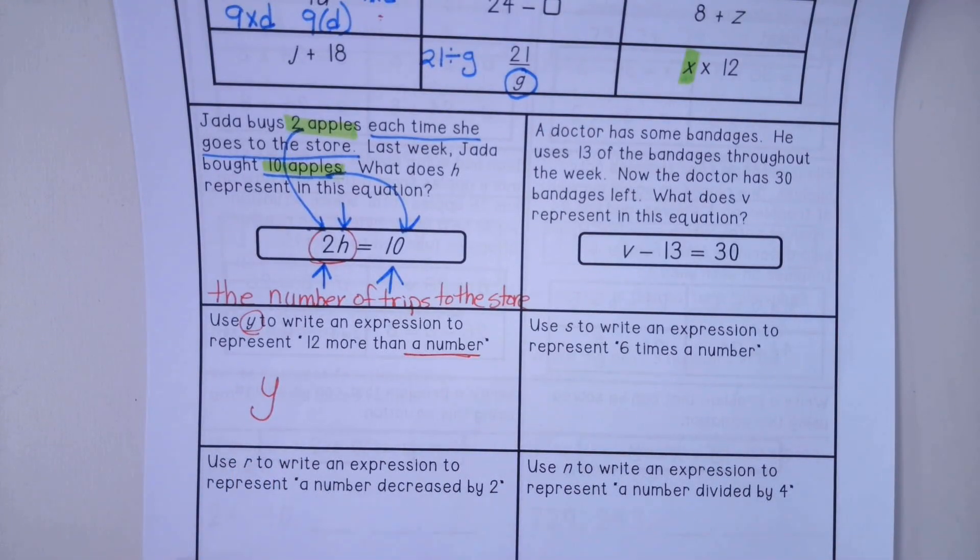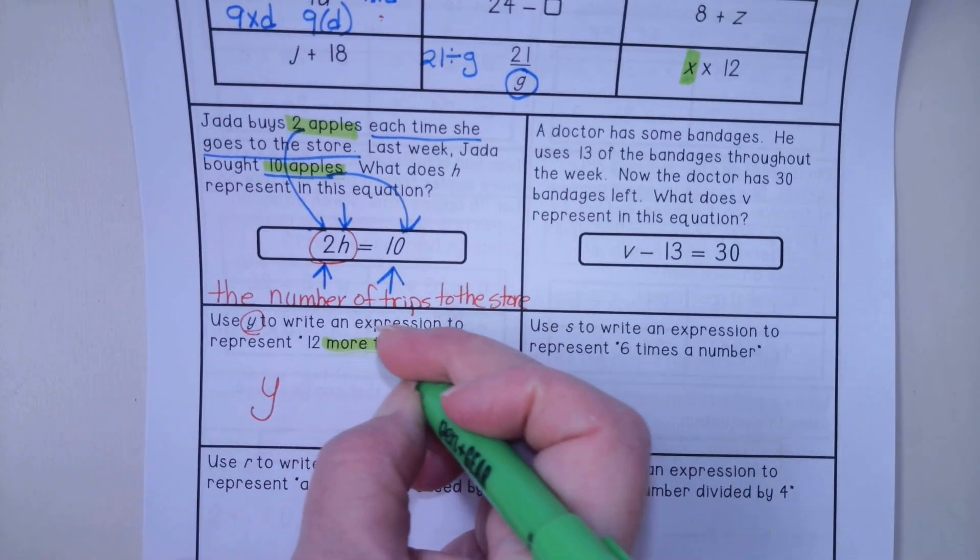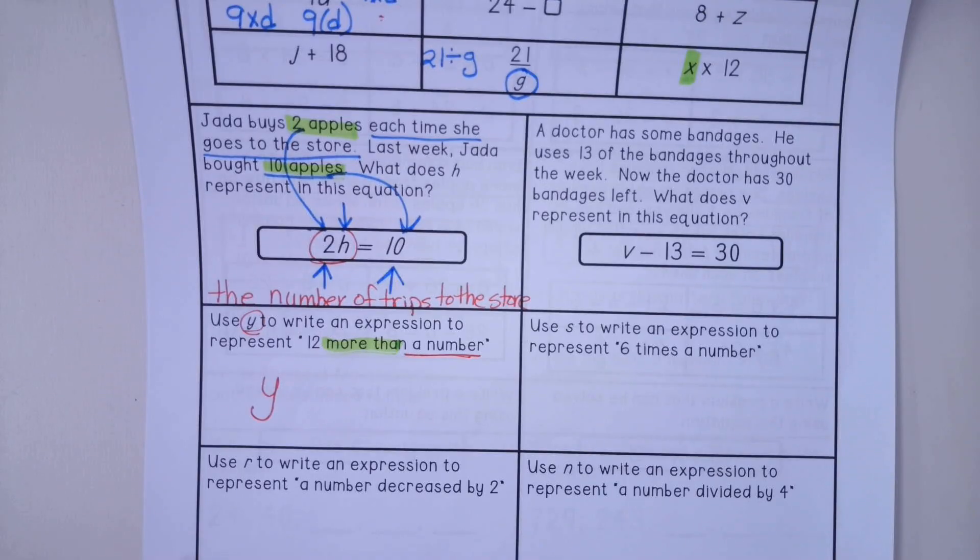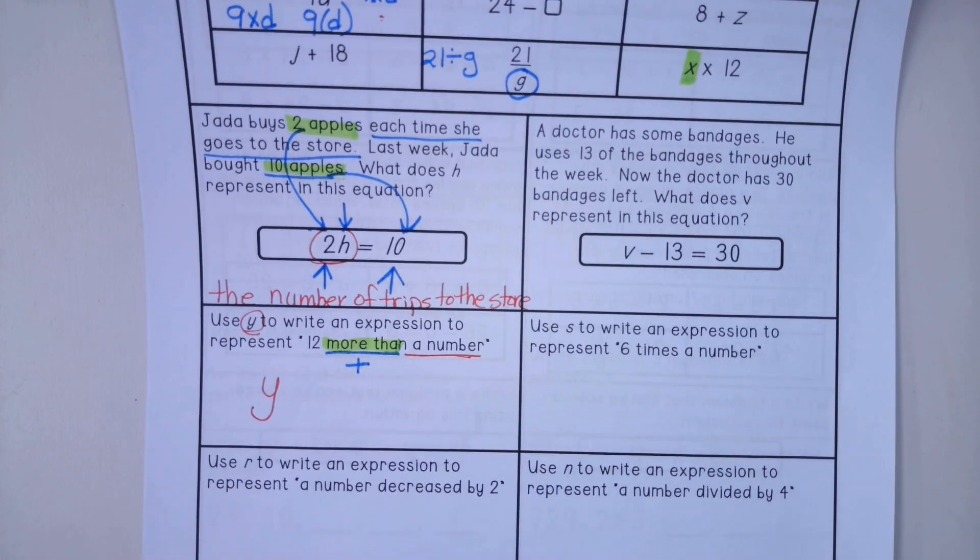And we want to do 12 more than—what operation is more than in this case? Could it be addition or multiplication? More than. In this case, it's going to be addition.